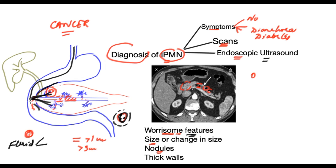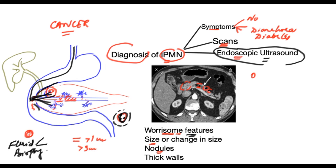Biopsies can also be taken, where material is examined directly for cancer. An endoscopic ultrasound assessment of a potential pancreatic cyst is extremely important. That is the general way of diagnosing and assessing IPMN of the pancreas. I hope you found it of use — if you have any comments, please do share.